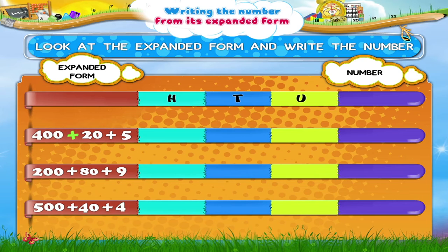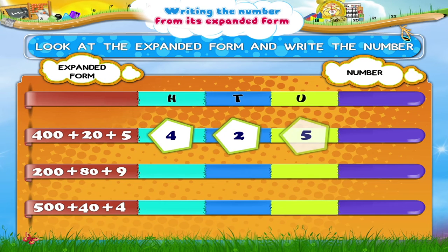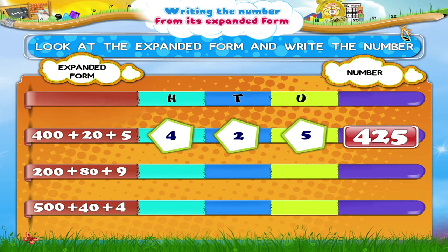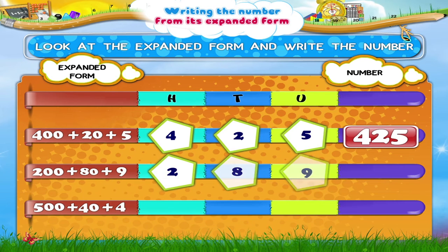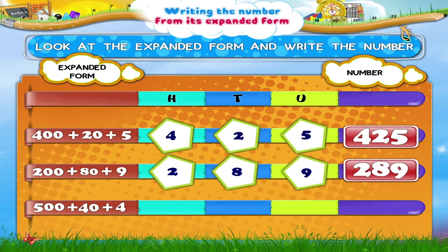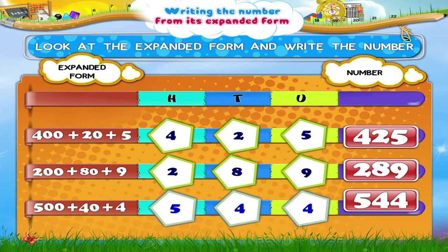400 plus 20 plus 5 is 425. 500 plus 40 plus 4 is 544.